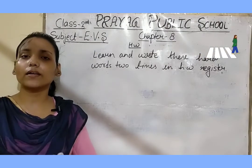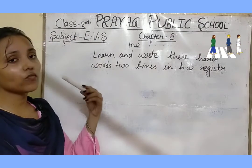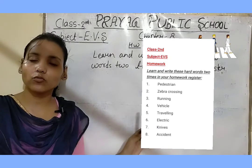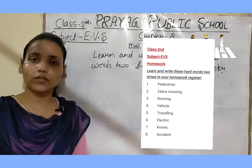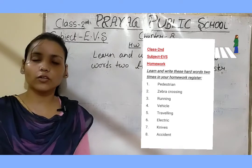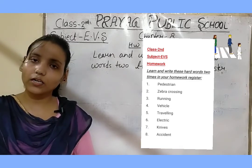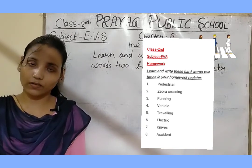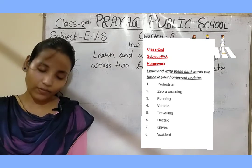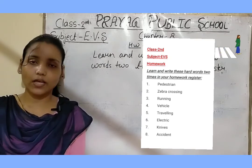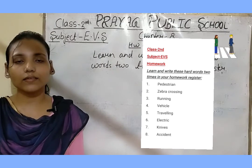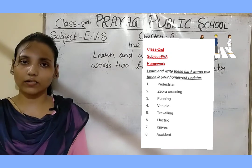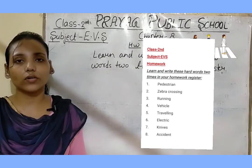Students, that's all for today. Now it's time to do the homework. Your homework is to learn and write these hard words two times in your homework register. The hard words are: pedestrian, zebra crossing, running, vehicle, traveling, electric, nice, and accident. Learn the spellings well and write them two times. Thank you.